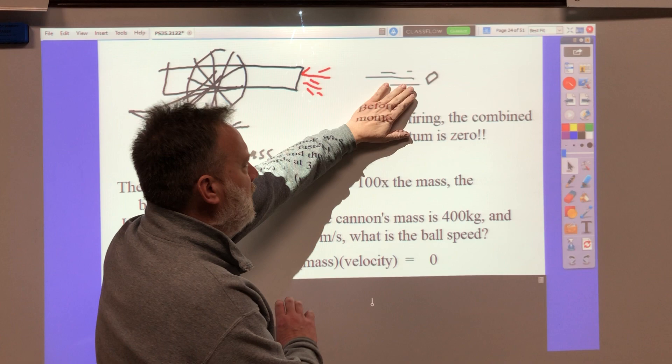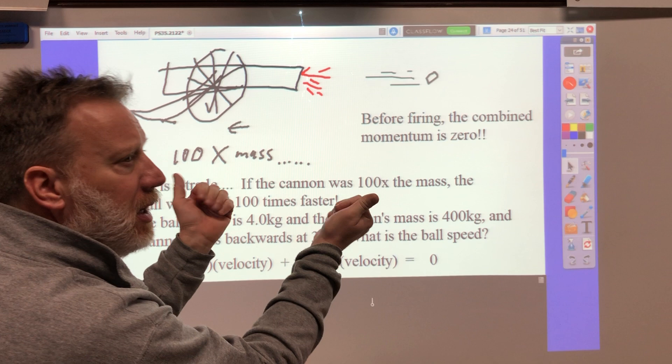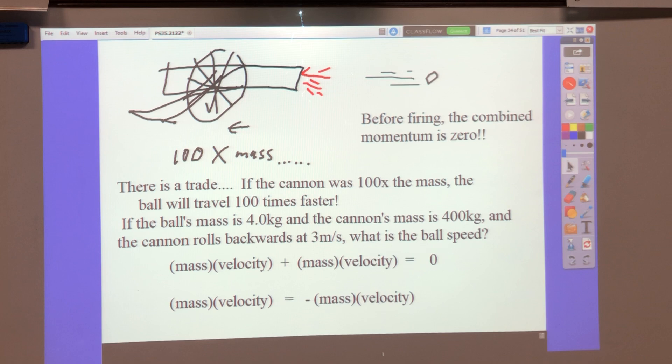This mass times this velocity, and this mass times this velocity have to be zero, just like they were before, because one's positive, one's negative. If we add them together, they should come out to zero. So I could subtract one off the other side, and this shows that they're equal and opposite, which is exactly what we expect.